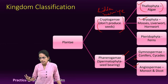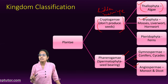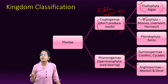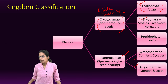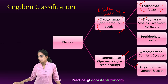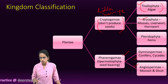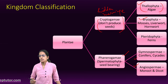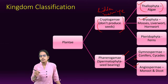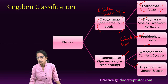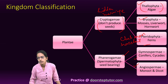Pteridophyta are called the first true vascular plants. Since they are the first true vascular plants, xylem and phloem are identifiable. Roots, stems and leaves are identifiable. Ferns are a classic example of pteridophytes. Under ferns, Azolla is a good example. Besides ferns, club moss and horsetails are also examples for Pteridophyta.